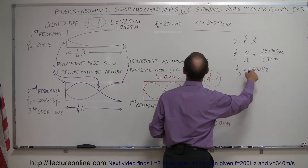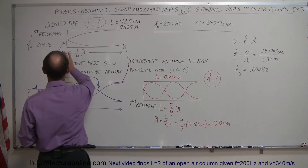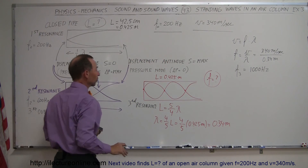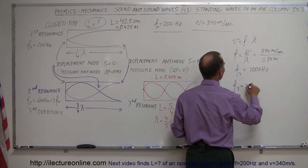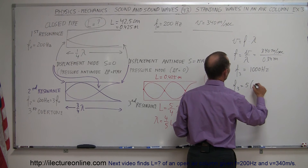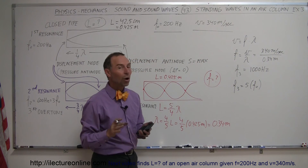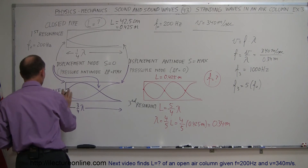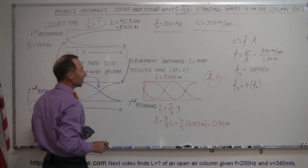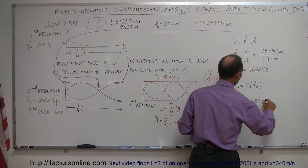Notice that 1,000 hertz is five times as much as the base frequency of the first resonance, which was 200 hertz. So we can say the frequency for the third resonance is five times the first resonance frequency. Since it's five times the base frequency, we call this the fifth overtone — whereas the second resonance at 600 hertz was called the third overtone, being three times the base frequency.